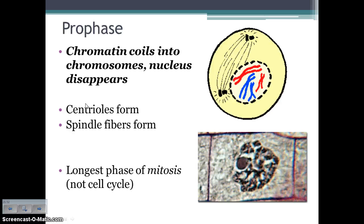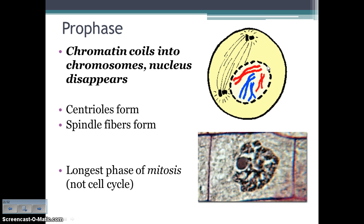Let's start with prophase. Draw a picture and write what's happening in each little box. In prophase, the chromatin condenses into chromosomes — so chromosomes are forming — and the nucleus is disappearing. Those are the two major things happening in this step. You also have centrioles forming that will start producing spindle fibers. This is the longest phase of mitosis — not the longest stage of the cell cycle (that's interphase), but of the mitosis portion, this is the longest stage.